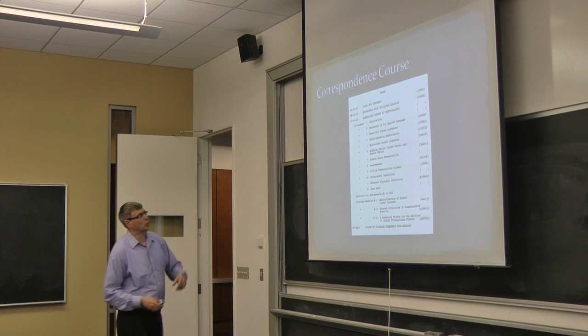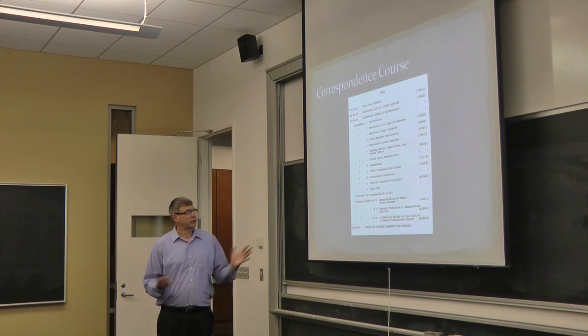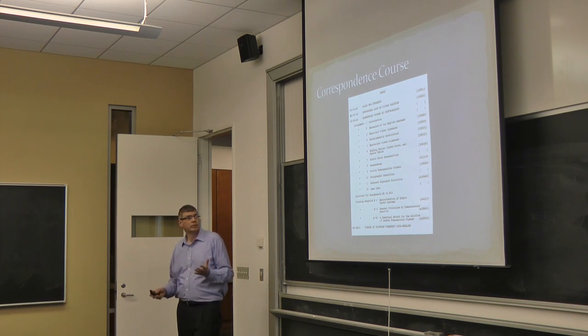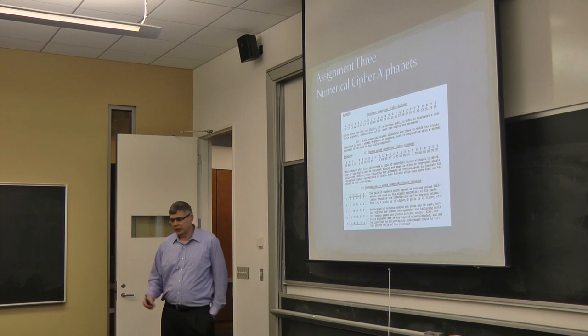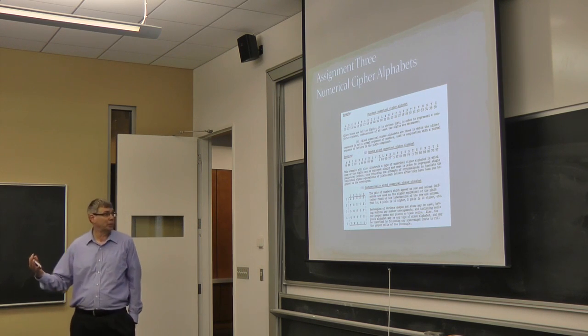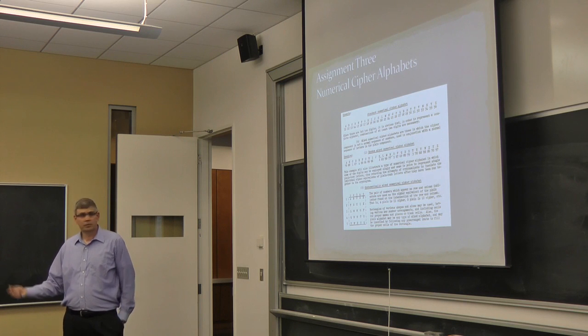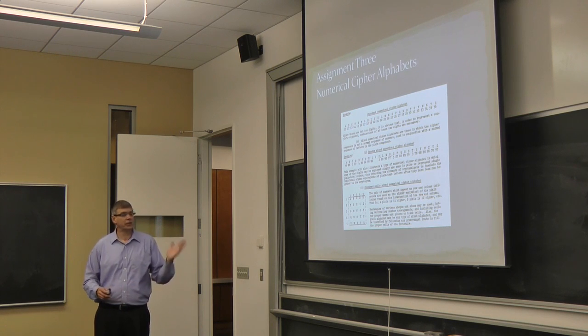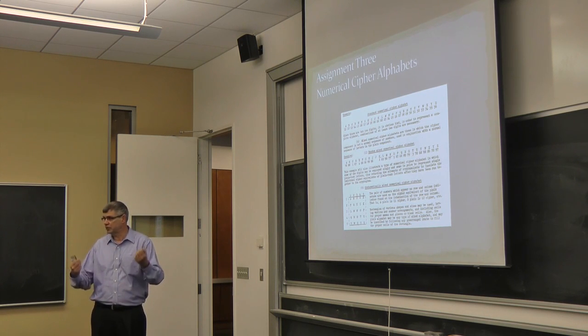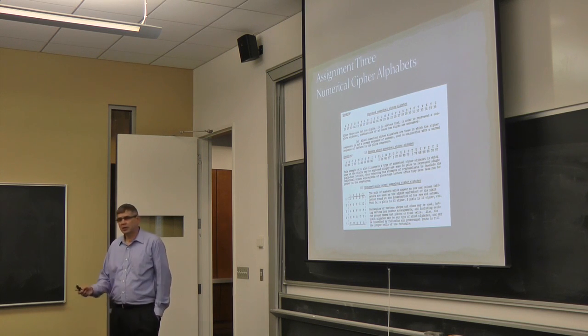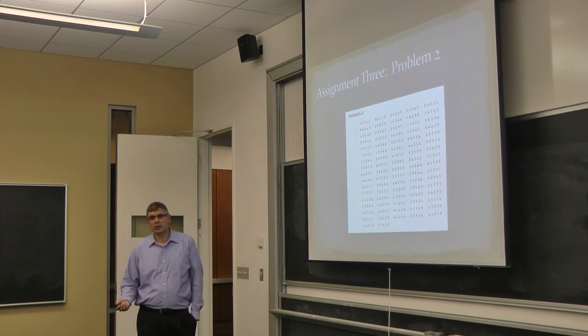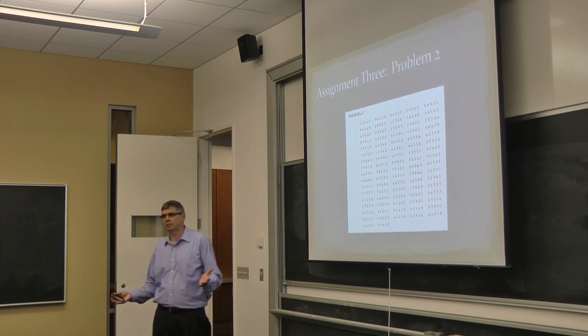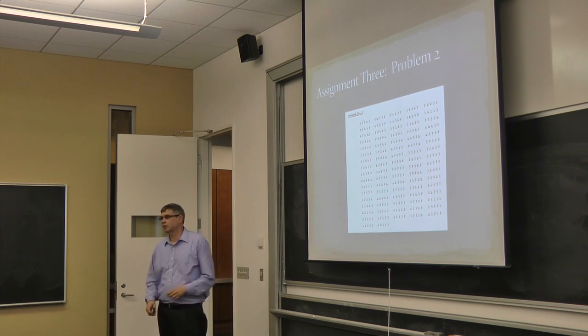The correspondence course consisted of 12 lessons, very short because they had to be mailed back and forth, and very elementary. Typically what you would see is two or three pages which would describe some cipher systems. This is about half of the first page of assignment three, and already they introduced three different cipher systems here in which you're replacing letters by numbers. After reading those two or three pages, the student would be given three or four pages of problems with no clue as to how to solve them, and just asked to solve them.